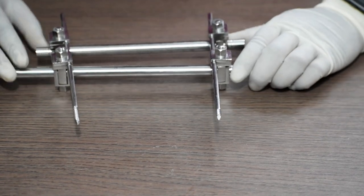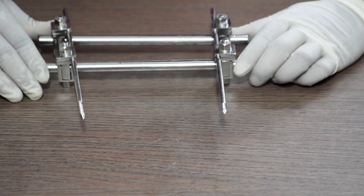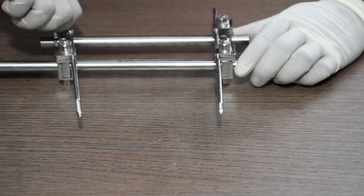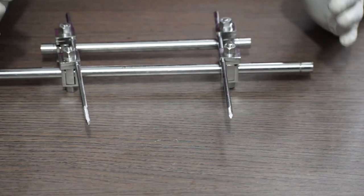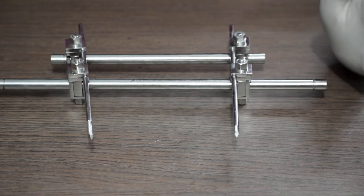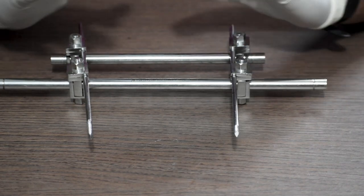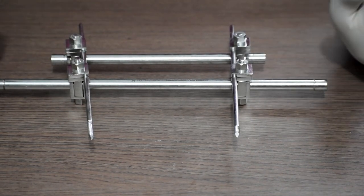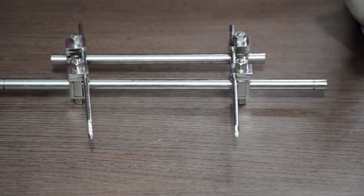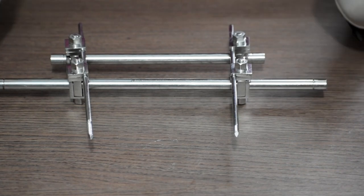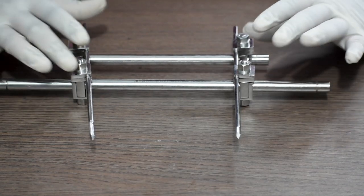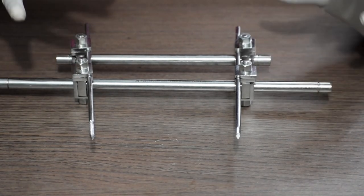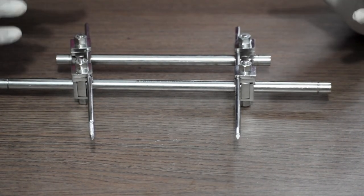Now, the size of the second rod will completely depend upon the surgeon's call. Usually, both the rods should be of same length. Double tubular rod fixations are done in order to give more stabilization to the fracture site.